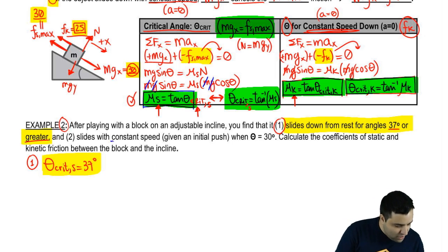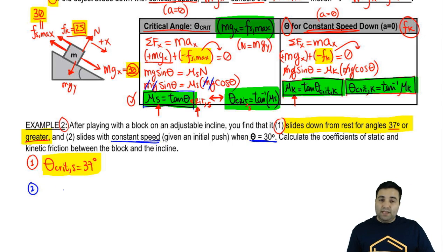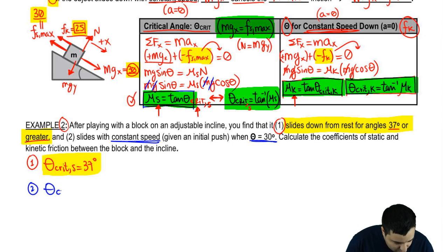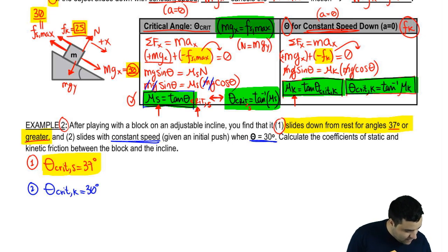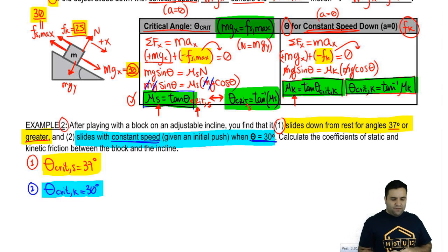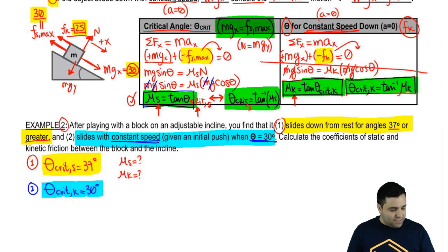Second, it slides with a constant speed when theta is 30 degrees. This means 30 degrees is your kinetic critical angle — theta-critical-kinetic equals 30. We'll use this information to calculate the coefficients of friction: mu-static and mu-kinetic.